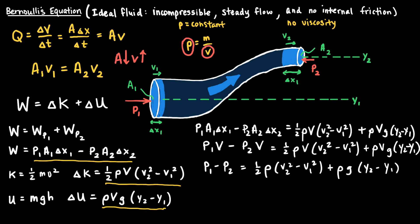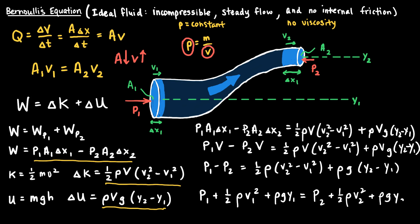We can stop here — this is Bernoulli's equation for fluid flow. But it is commonly written with everything related to point 1 on the left and everything related to point 2 on the right: P1 + ½·ρ·v1² + ρ·g·y1 = P2 + ½·ρ·v2² + ρ·g·y2. This is Bernoulli's equation for fluid flow.